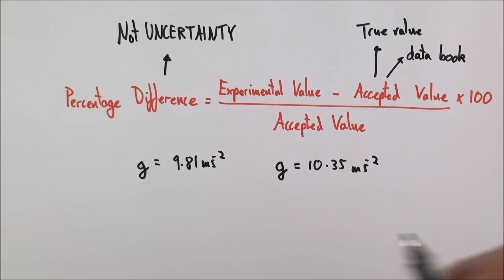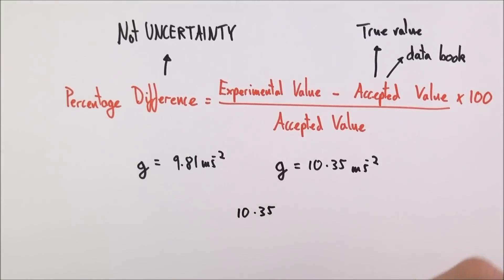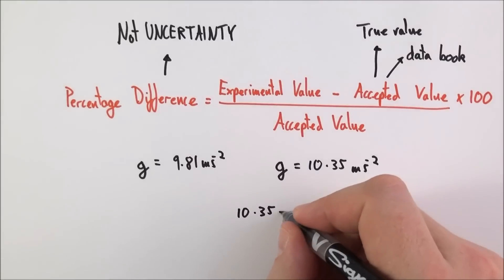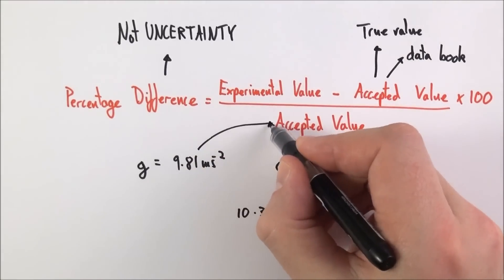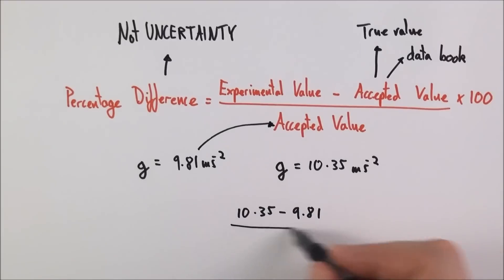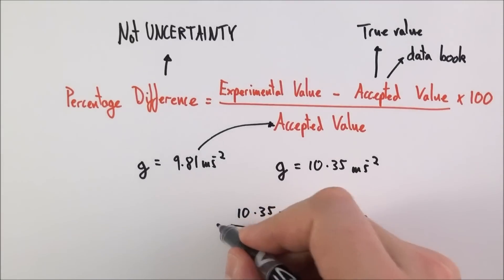So we put the numbers in. First of all, the experimental value is 10.35. The accepted value is 9.81. We divide that by the accepted value of 9.81, and then we multiply by 100 to give our answer as a percentage.